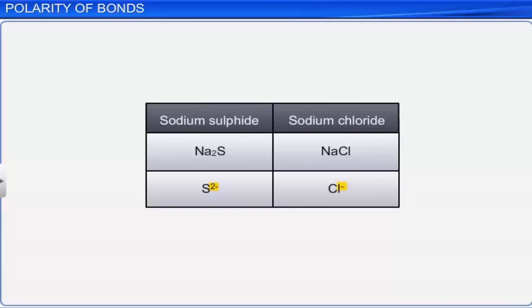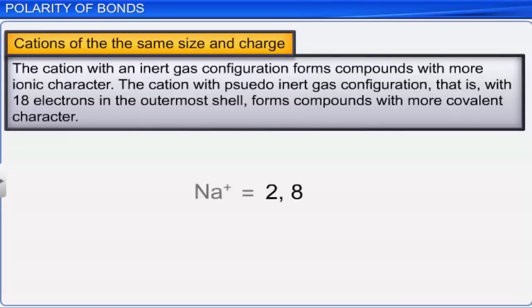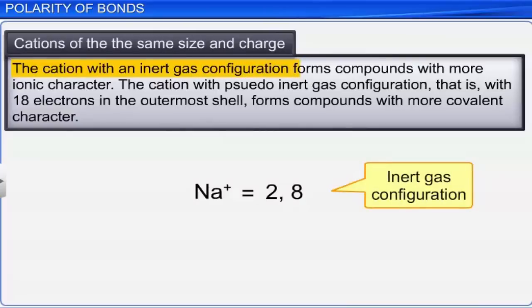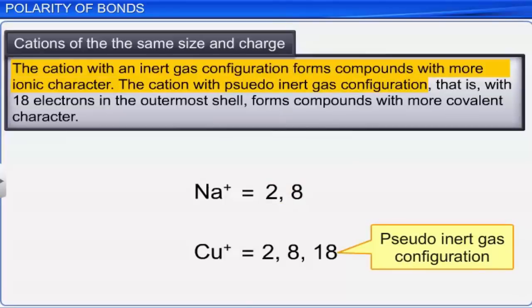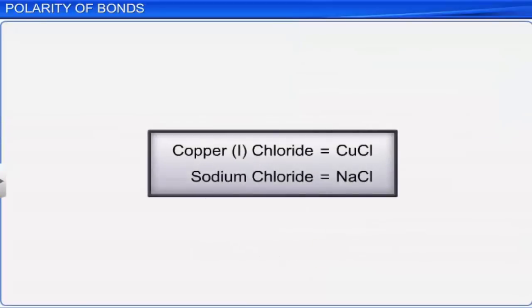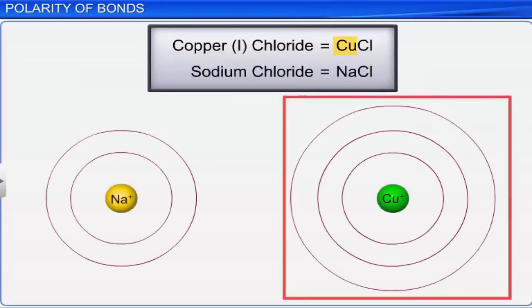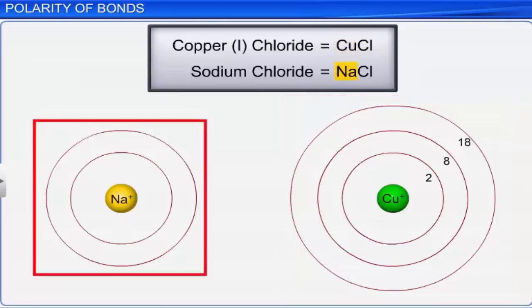For cations of the same size and charge, the cation with an inert gas configuration forms compounds with more ionic character. The cation with pseudo inert gas configuration — that is, with 18 electrons in the outermost shell — forms compounds with more covalent character. For example, copper(I) chloride is more covalent than sodium chloride. Copper ion with pseudo inert gas configuration has an electronic configuration of 2, 8, 18, while sodium ion has a configuration of 2, 8.